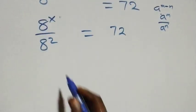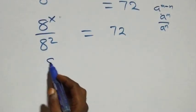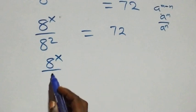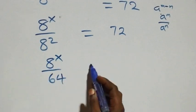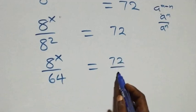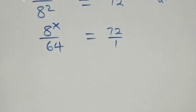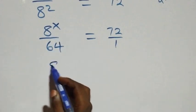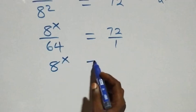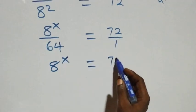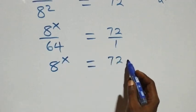We write this as 8 raised to power x over 64 equals 72 over 1. Then we cross multiply, and 8 raised to power x times 1 becomes 8 raised to power x equals 72 times 64.